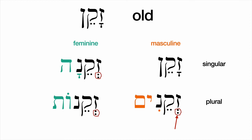At first, everything is new and it feels like there's a lot to learn. But what I'm trying to illustrate is that patterns will emerge such that the only energy you'll expend in the near future will be in learning new words — zahkane means old, gadol means big. Figuring out what endings to add and what minor changes in the front of the word might take place, you're going to find that relatively easy, almost second nature.